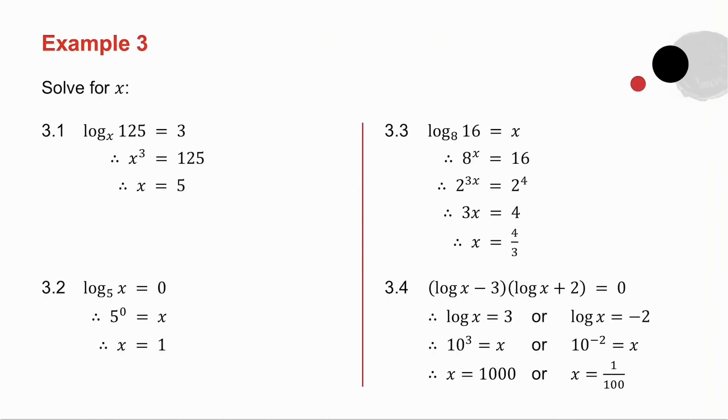In 3.1, I change to exponential form. What to the power 3 is 125? It's 5, so x is 5. 3.2, I change to exponential form. Solve for x. 3.3, change to exponential form. 8 is 2 cubed, 16 is 2 to the 4, and I solve for x. 3.4, either the first bracket could be 0 or the second bracket could be 0, and I solve for x, remembering that if there's no base, it's base 10.